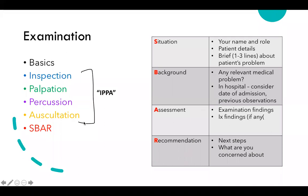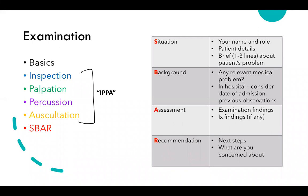Also check for pitting oedema at the ankles and sacral oedema above the buttocks. Each university has its own OSCE checklist, so refer to that for required steps. If you forget something like oedema or vocal resonance but performed everything else correctly and safely, examiners are unlikely to fail you for missing one item.